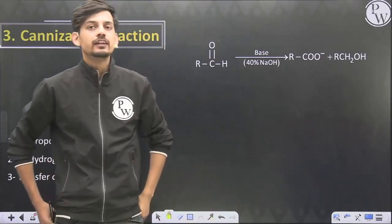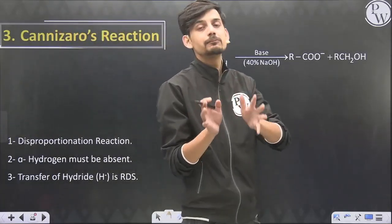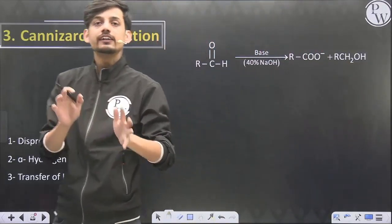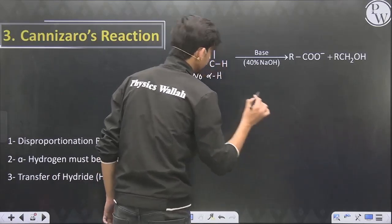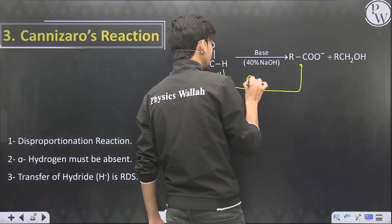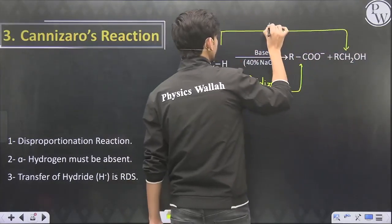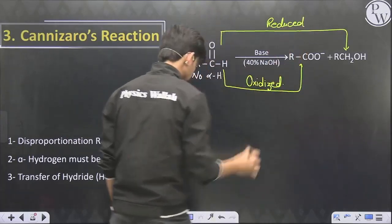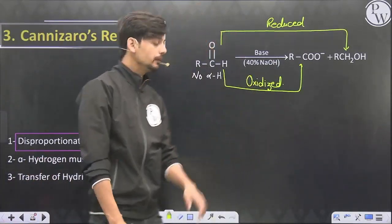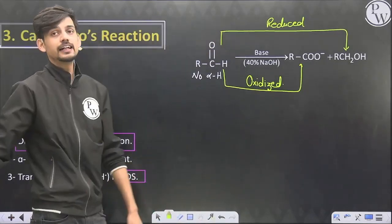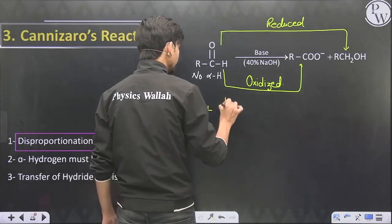When an aldehyde or carbonyl compound does not have any alpha hydrogen, the same basic medium gives the Cannizzaro reaction. Cannizzaro reaction and aldol condensation are parallel reactions occurring over different carbonyl molecules. If there is no alpha hydrogen, a basic medium gives us disproportionation: one molecule is oxidized into a carboxylate salt (basic medium), and the other molecule is reduced into an alcohol. The transfer of H⁻ from one molecule to another is the rate-determining step.